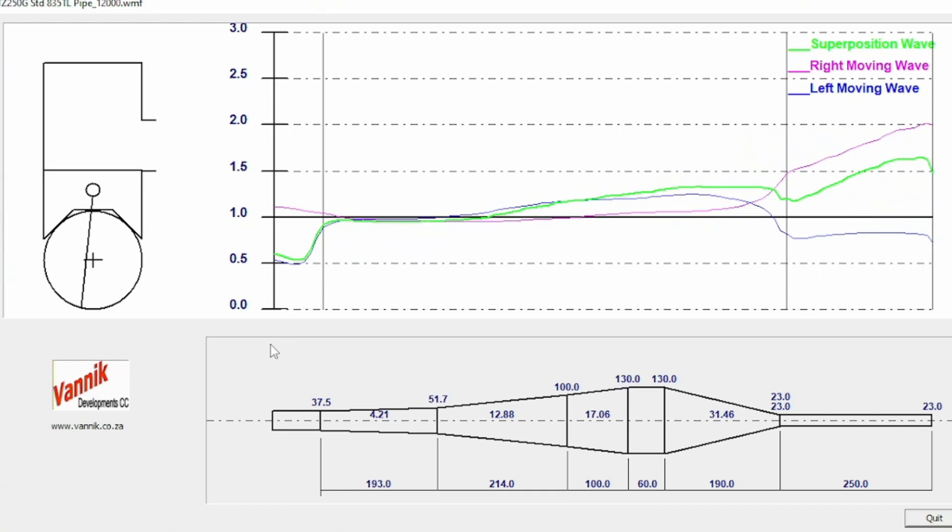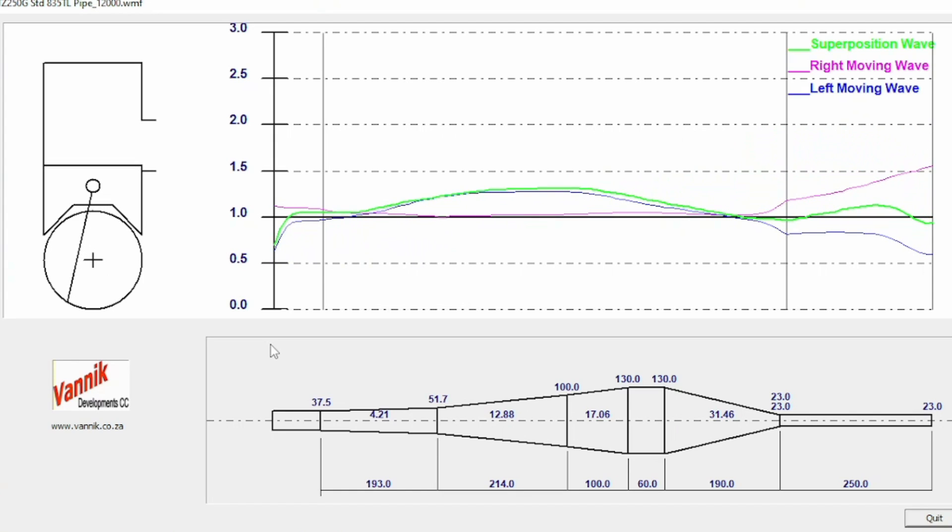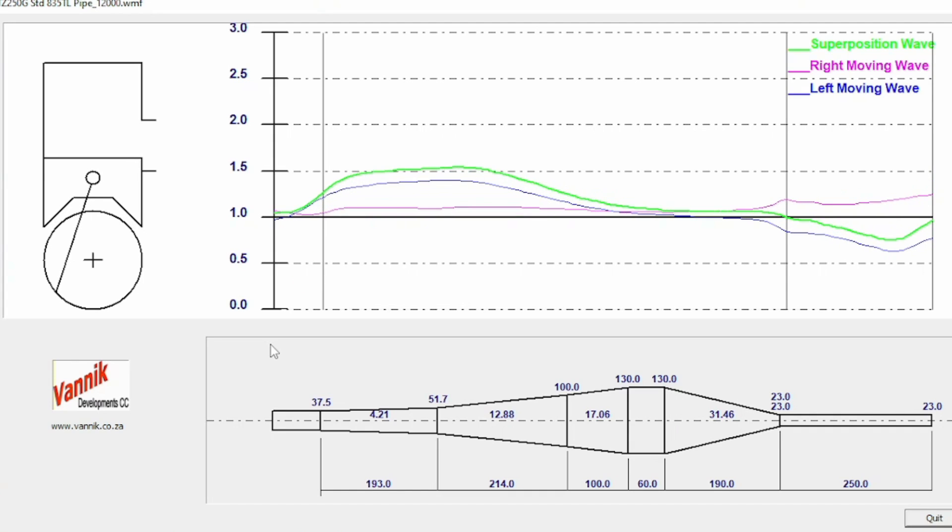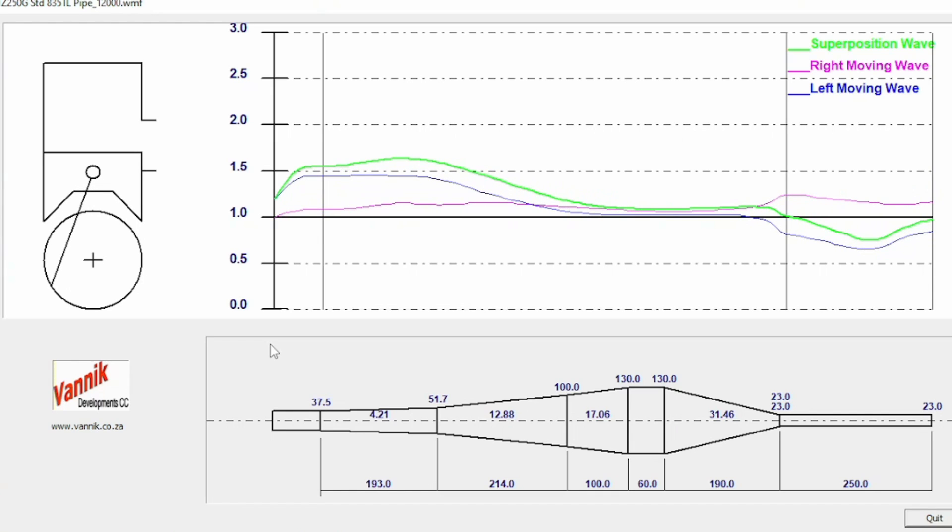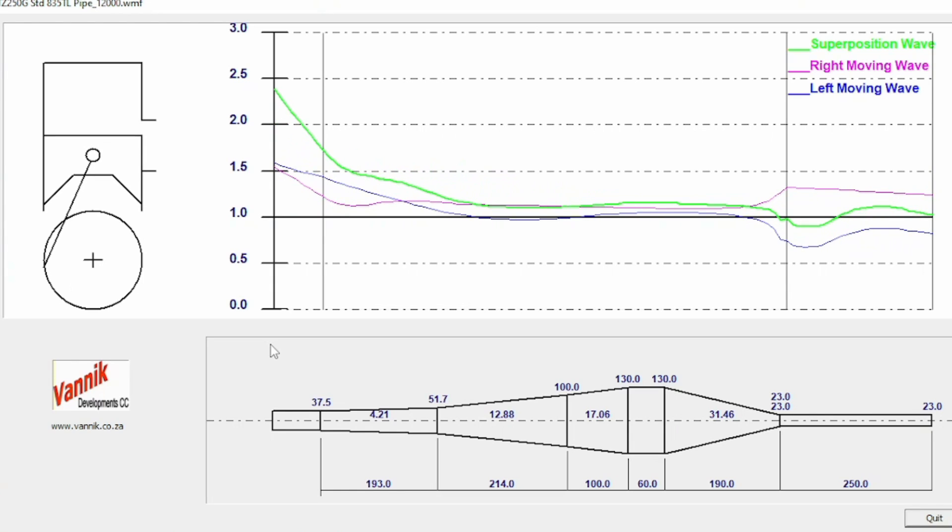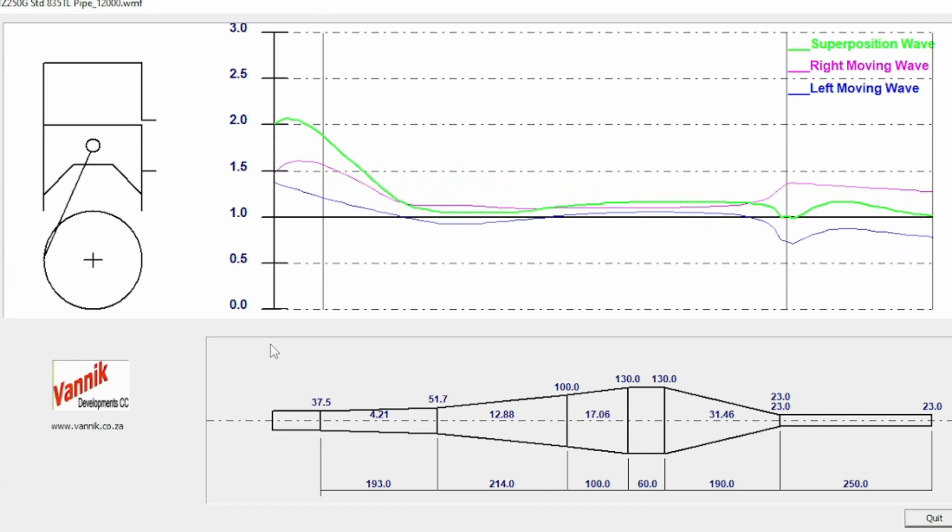And starts to move back down leftwards back to the exhaust port where it should be able to stuff some extra mixture in. So all the suction's done now and we're now starting to build up pressure from the left moving wave. And you can see the superposition wave as well, and that is stuffing some of that fresh mixture back into the exhaust, increasing trapping efficiency, increasing power.